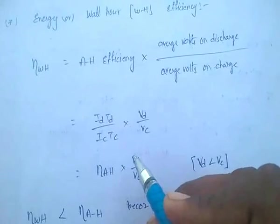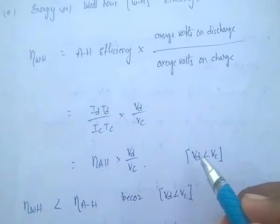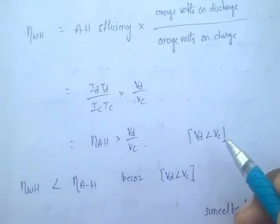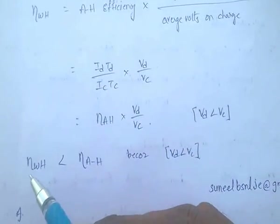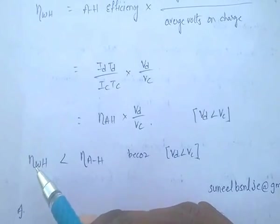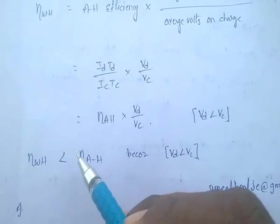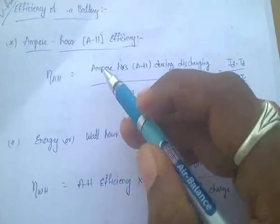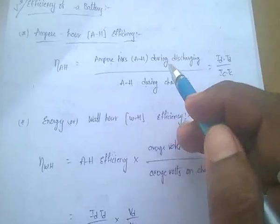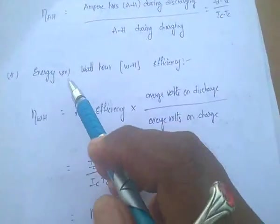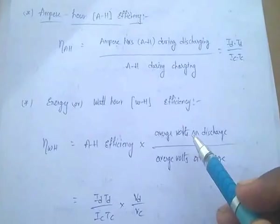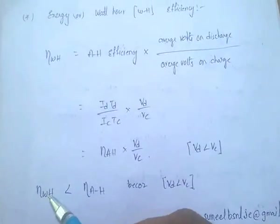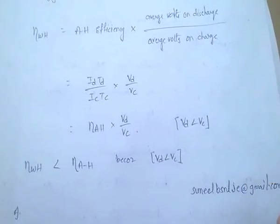WH efficiency is always less than AH efficiency because V_D is always less than V_C — that means voltage at discharge is always less than voltage at charging. To recap: AH efficiency = ampere hours during discharging / ampere hours during charging; WH efficiency = AH efficiency × (V_D / V_C), and WH efficiency is always less than AH efficiency.